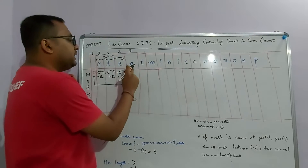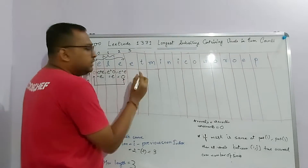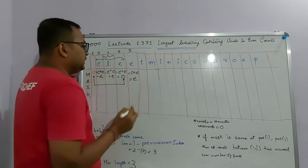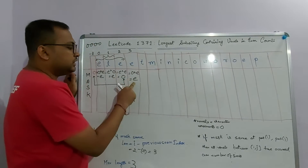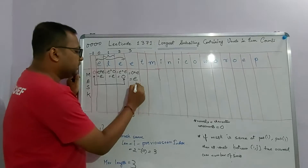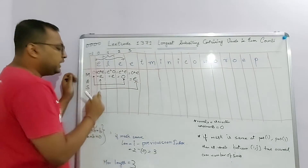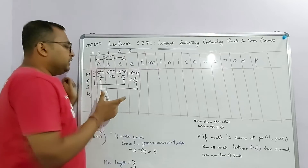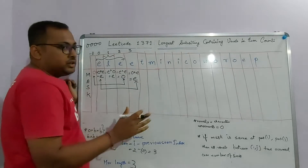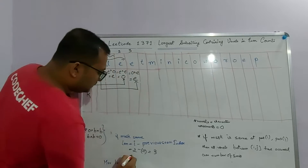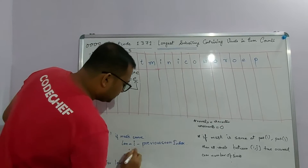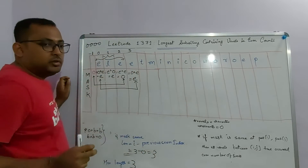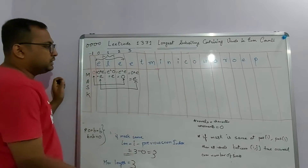At index 3 we have 'E' again. The previous bitmask was 0, so 0 XOR E = E. We've seen mask E before — it was first seen at index 0. That means the substring from index 1 to index 3 has all vowels occurring an even number of times. The length is 3 minus 0 = 3, which equals our current best, so we don't change it.